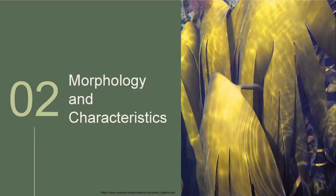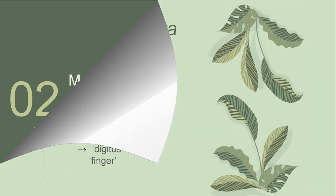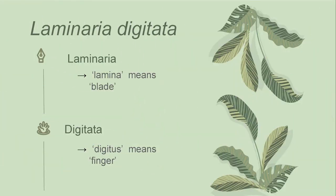Now let's proceed with Laminaria digitata's morphology and characteristics. Laminaria, widely known as kelp, is the most complex and largest brown alga. It is one of the most important seaweed genera due to its enormous number of species, biomass, dominance, and economic importance. The Laminaria genus is derived from the Latin word lamina, which means blade, and refers to the seaweed's blade-like fronds. And digitata came from the Latin word digitus, which signifies finger and alludes to the shape of the seaweed's thallus, which has been compared to the shape of a human hand.